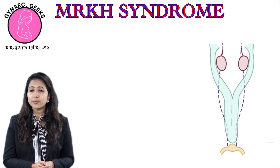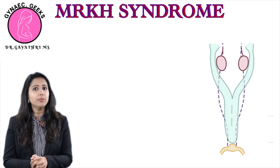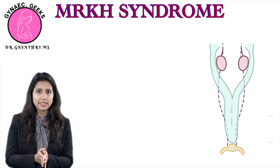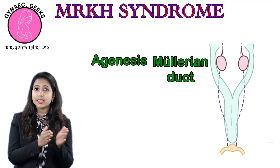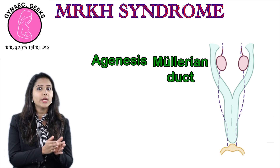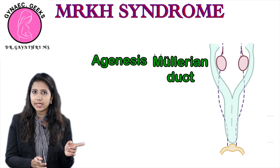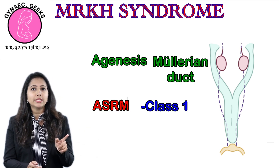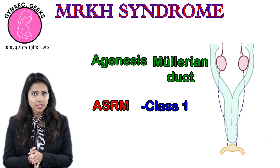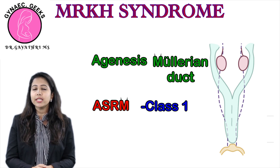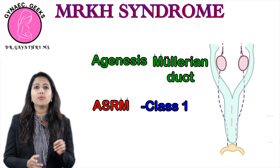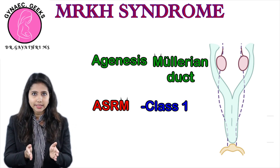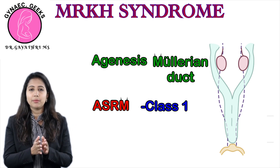The problem is basically with the development of the Mullerian duct. What happens is that there is agenesis of the Mullerian duct. This comes under Class 1 of the Mullerian anomalies under the ASRM classification. In this, both the Mullerian ducts are not developing.